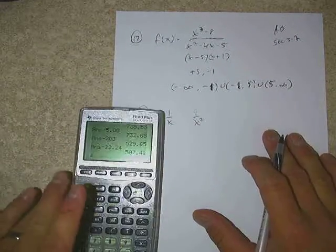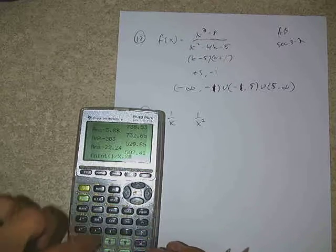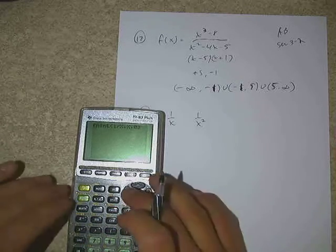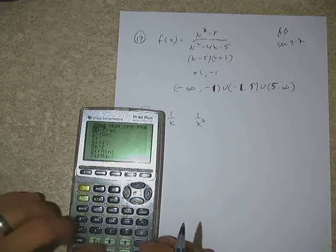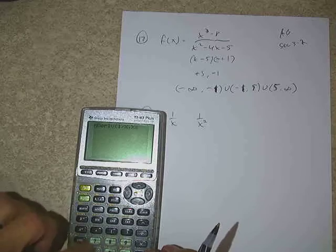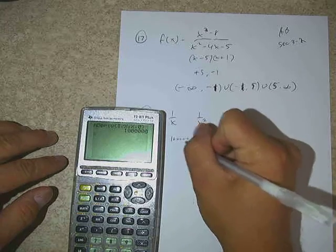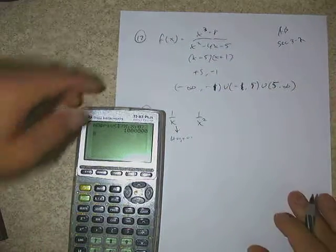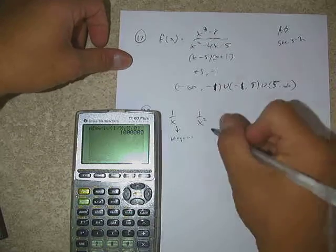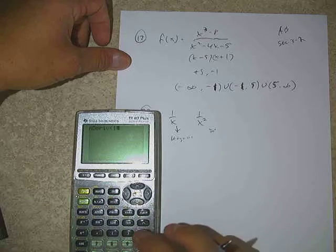And in part B it says find the derivative if it exists at x equals 0. So even though we know there's a discontinuity there, we're going to find it anyway using the calculator. We'll put it in here and it's going to give us an answer, even though it's not defined there. There's no derivative there. The calculator is going to give us an answer and we're going to write it down.